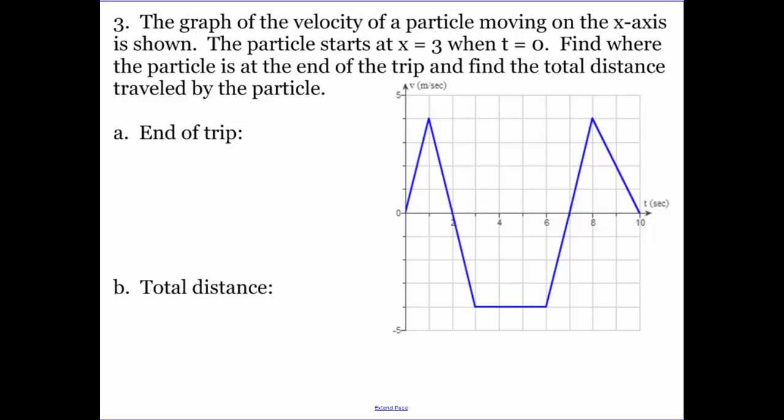Number three. Graph shows the velocity of a particle moving along the x-axis as shown. Particle starts at x equals three when t equals zero. Find where the particle is at the end of the trip, and the total distance. So I need my velocity. So let's find the area of each one of these. This first one's a triangle, so we have one-half base times height. My base is two, so one-half times two is one, times my height is four. This is one-half base times height again, so I have one, two, three for my base, but four for my height. So this area is six. If we have a trapezoid in here, this area is going to be a negative sixteen.